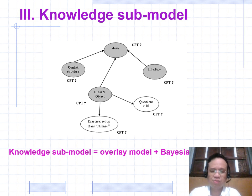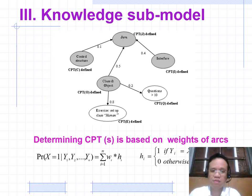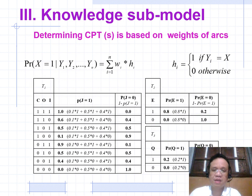The Knowledge submodel is a combination of an overlay model and a Bayesian network. The CPT (Conditional Probability Table) is determined based on the weights of arcs — CPT is the conditional probability table. The formulation to determine CPT is based on the weights of arcs.